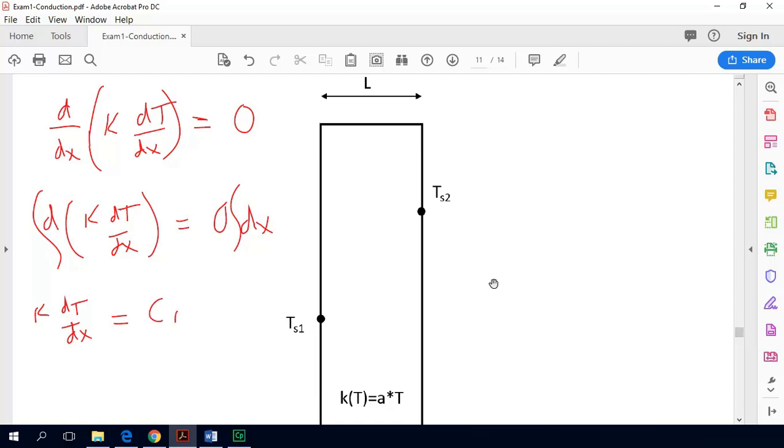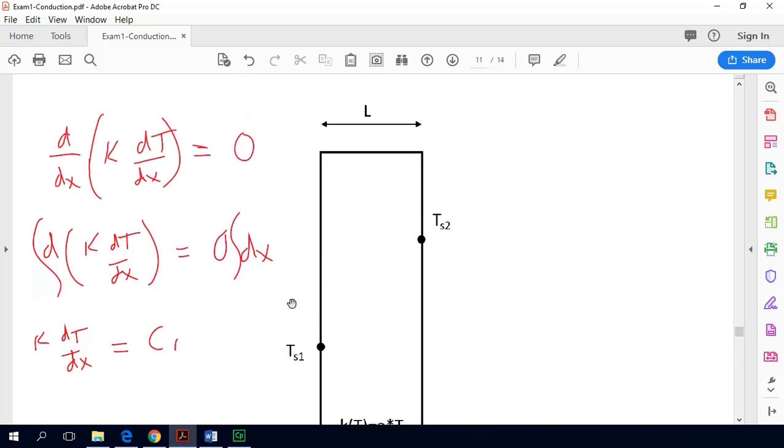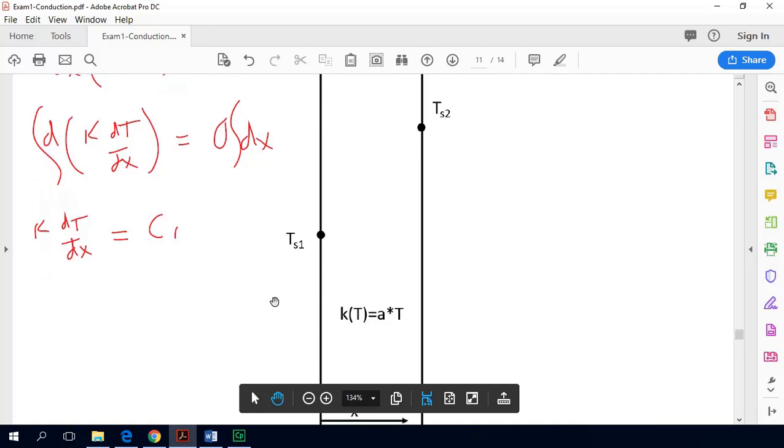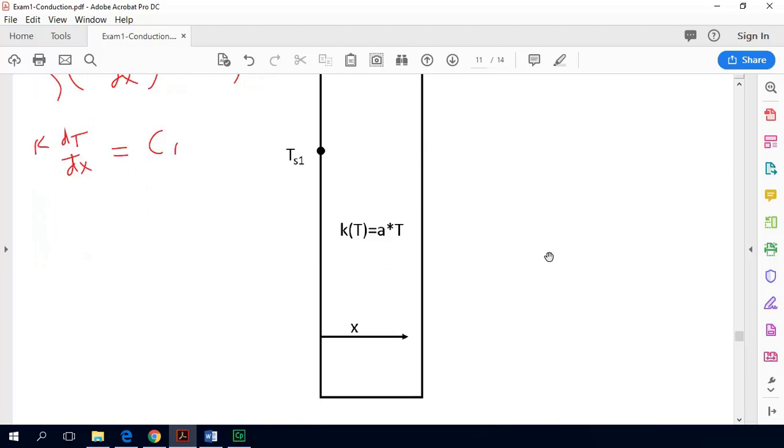So right now our boundary conditions are going to be given in terms of these two surface temperatures. So we do not need to apply a boundary condition right now. If we had a flux boundary condition which would be expressed in dtdx it might be more convenient for us to apply that boundary condition. But since we have two surface temperature conditions we won't worry about applying the boundary condition just yet. So we will integrate this again now.